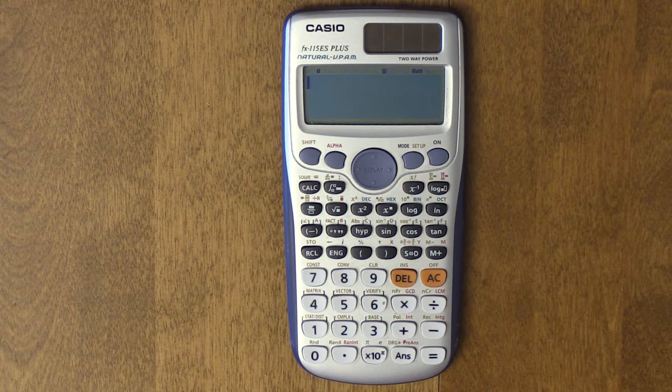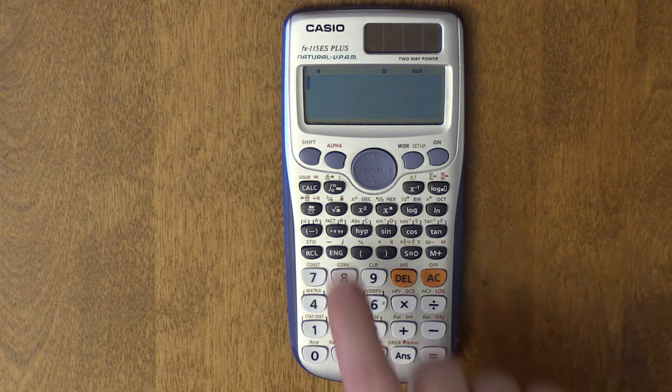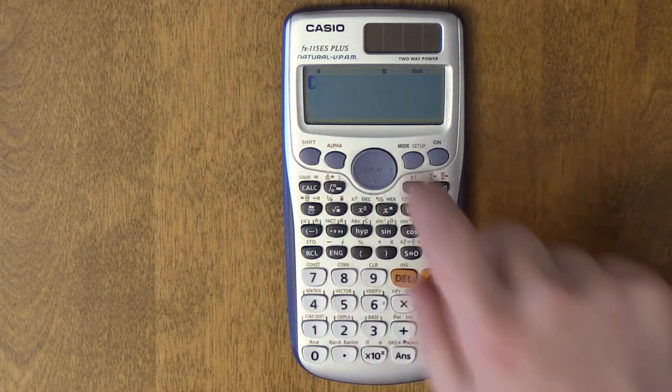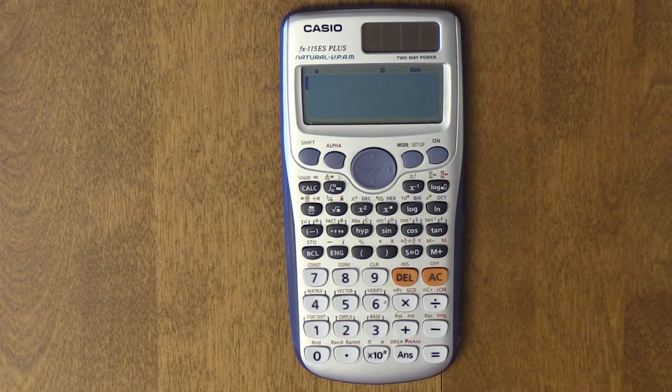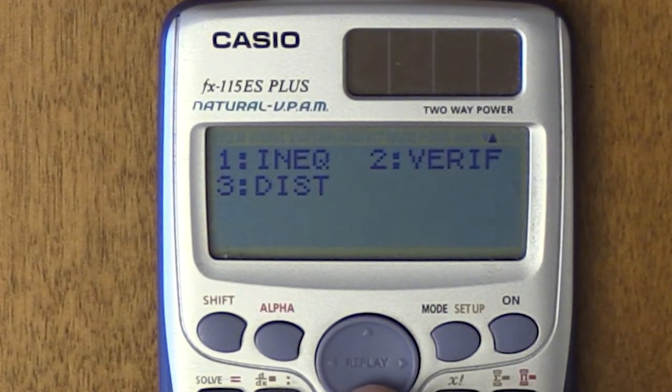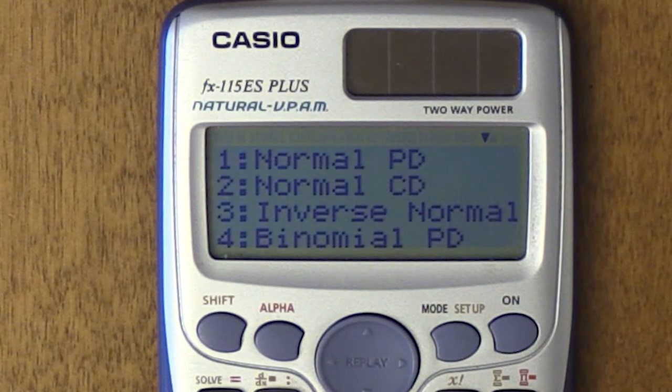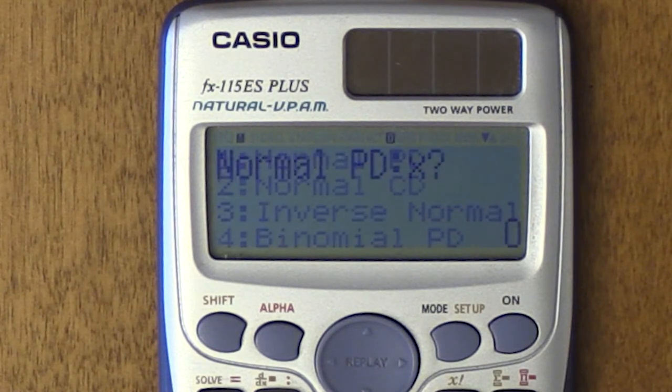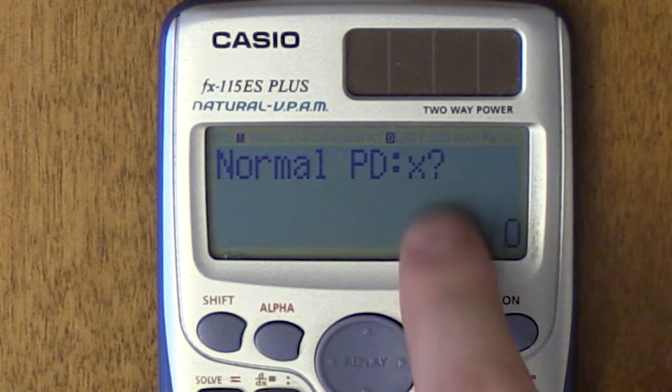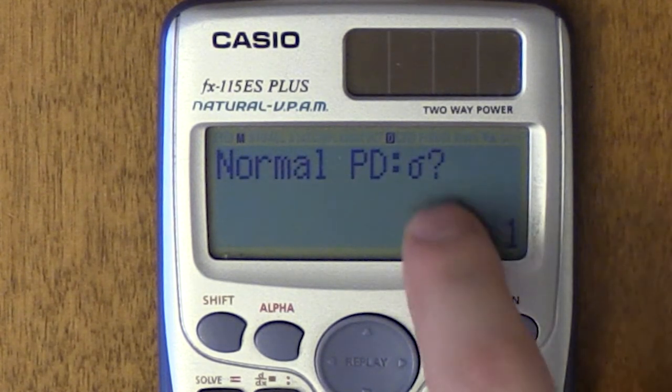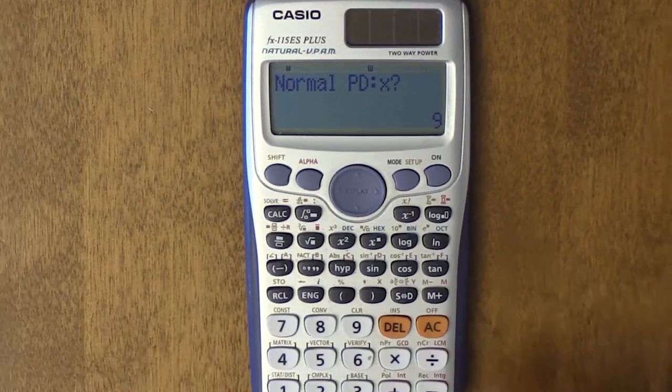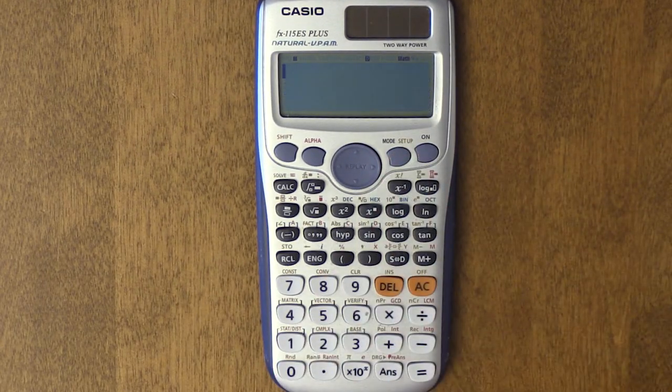This calculator also does statistics and not just permutations and combinations. Those you could do shift, then NPR, and shift and then NCR. It'll give you permutation and combination. But you can actually do something a little more advanced. Type mode and you click down to get to the second panel. Distribution is 3. You have normal, inverse, binomial, and so on. I haven't used this in a while, so I don't remember every single variable. But let's say you wanted normal, type in 1. It'll ask you your x value, ask you your sigma, ask you your mu, and then it'll solve it for you.